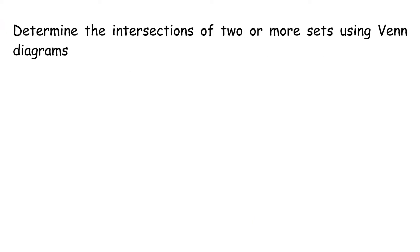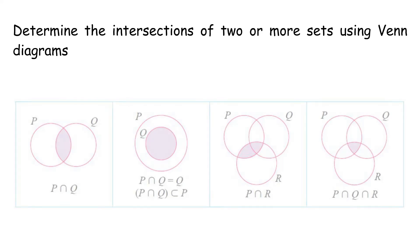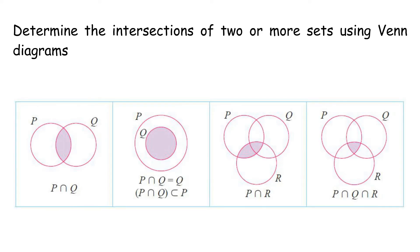Determine the intersections of two or more sets using Venn diagrams. The intersection of two or more sets are represented by the shaded regions.